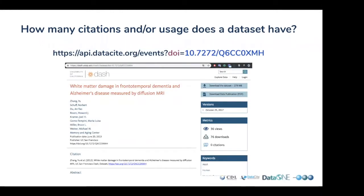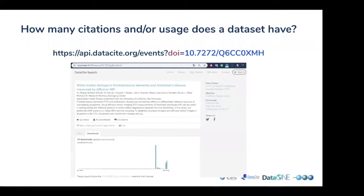We're all familiar with the simple case — consuming usage and citations from a specific dataset, done thanks to the DOI assigned to those datasets. This is an example from the DASH repository. You can see on the right side of the screen a usage display with views and downloads for that specific dataset. The same dataset can also be seen in the DataCite search interface, showing the same usage and downloads along with the distribution over time of how they are coming into the system.